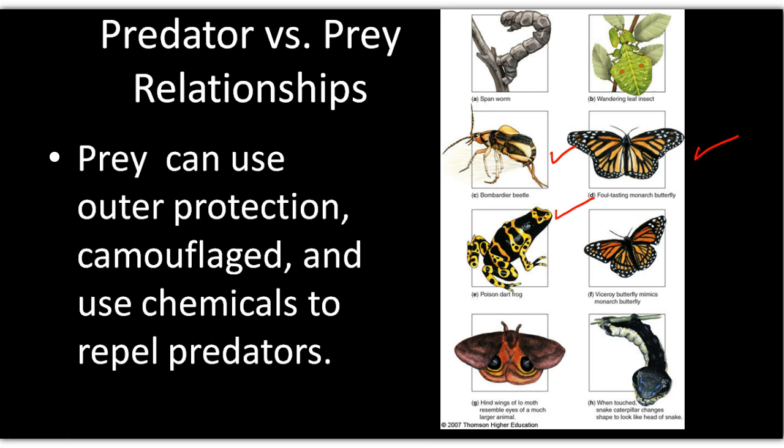The last two examples are a moth and a caterpillar that both resemble a predator themselves, which may scare off whatever is trying to eat them — camouflaging as something dangerous rather than just blending into the background.